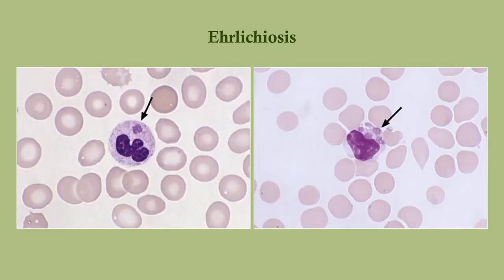Here you can see a granulocyte with a morula — it looks like a little blueberry. You can also see them in what appears to be a monocyte, with multiple morulae that look like blueberries or raspberries.